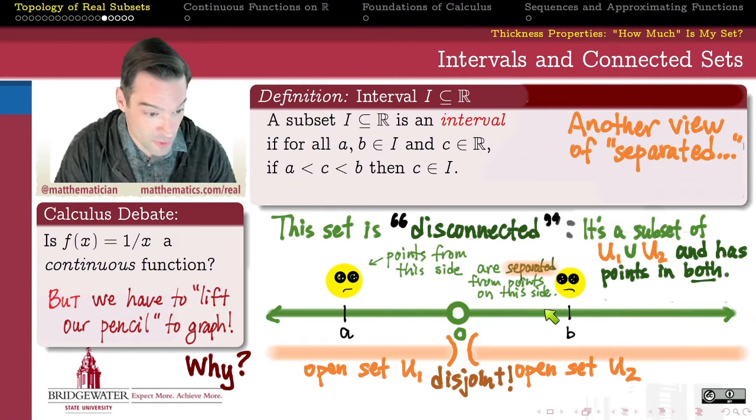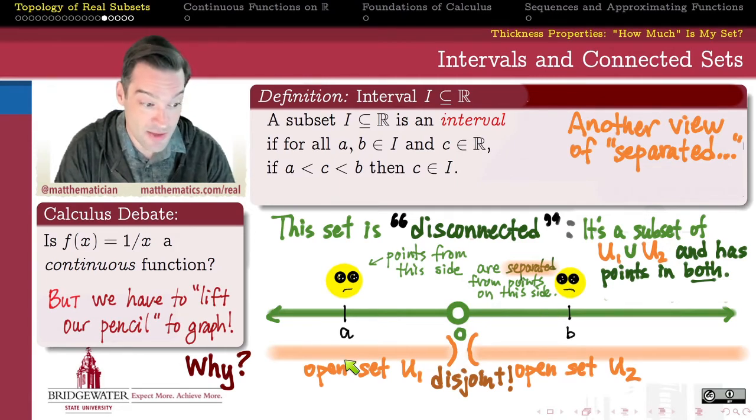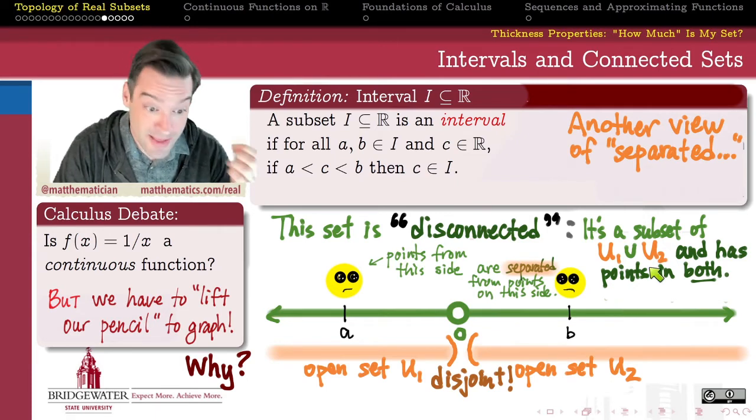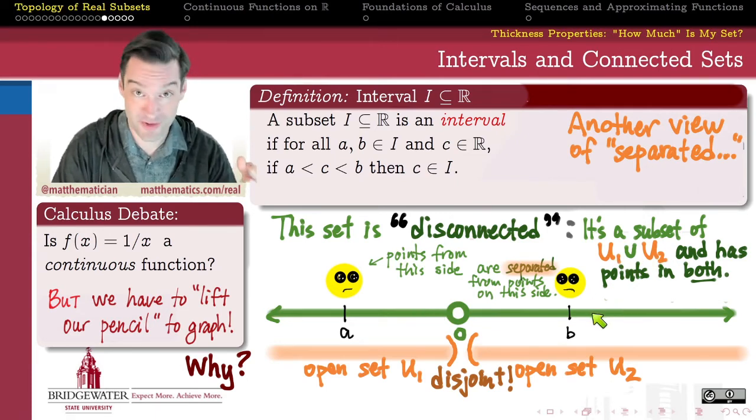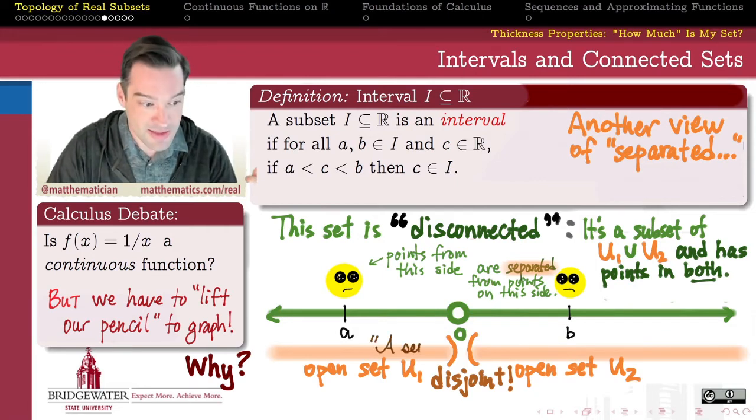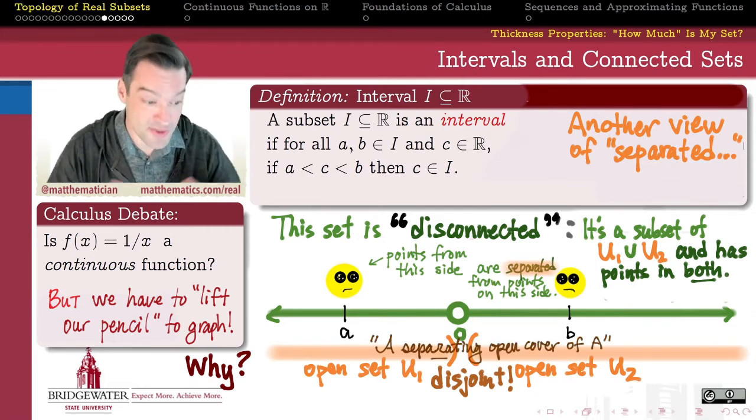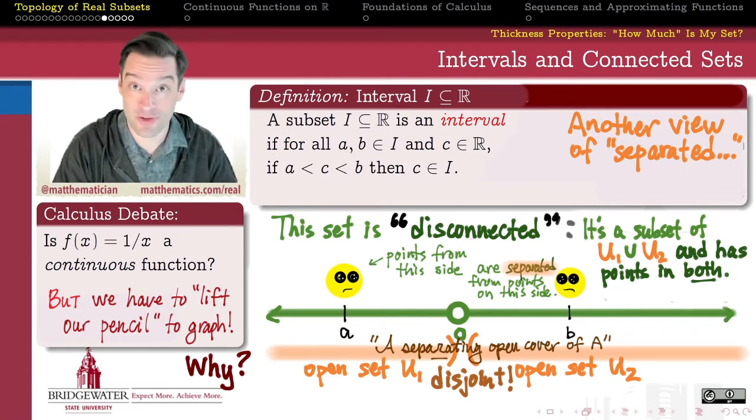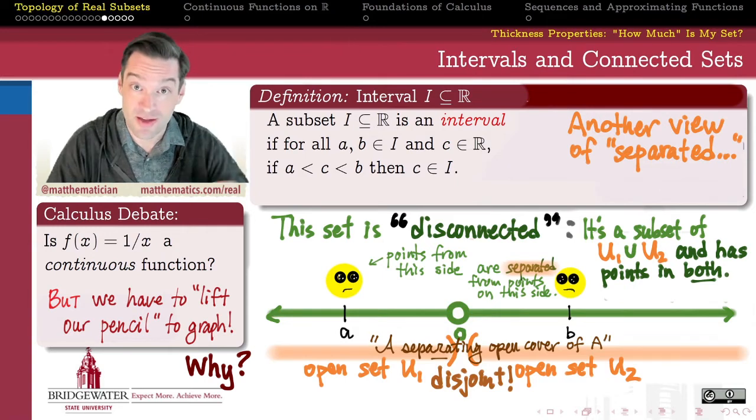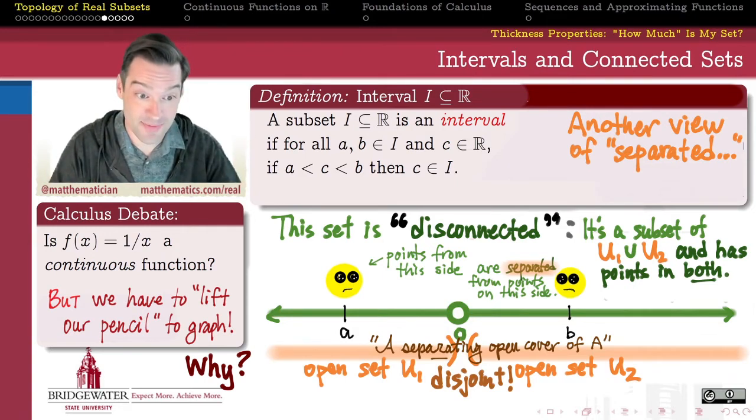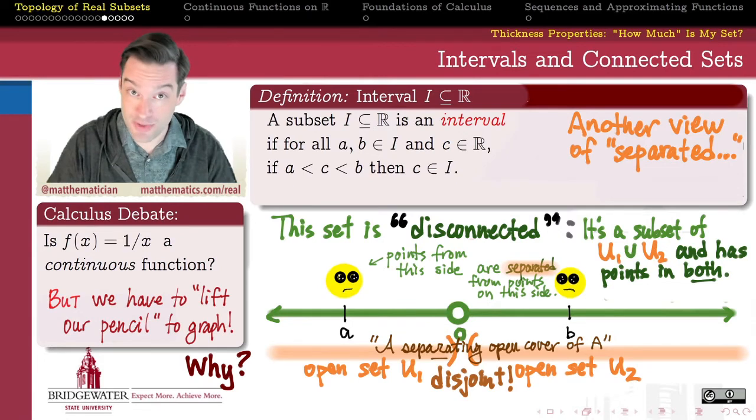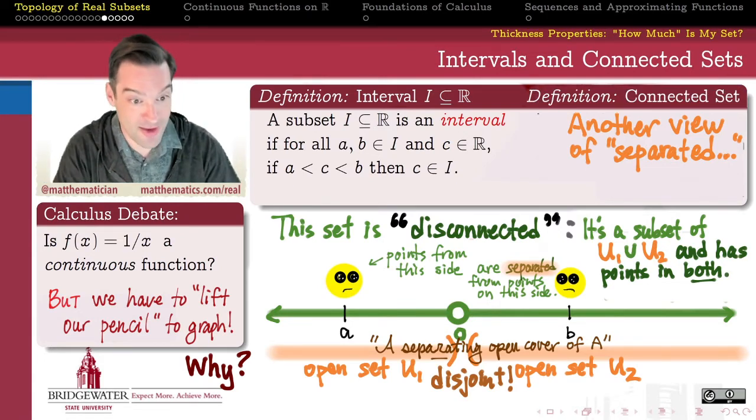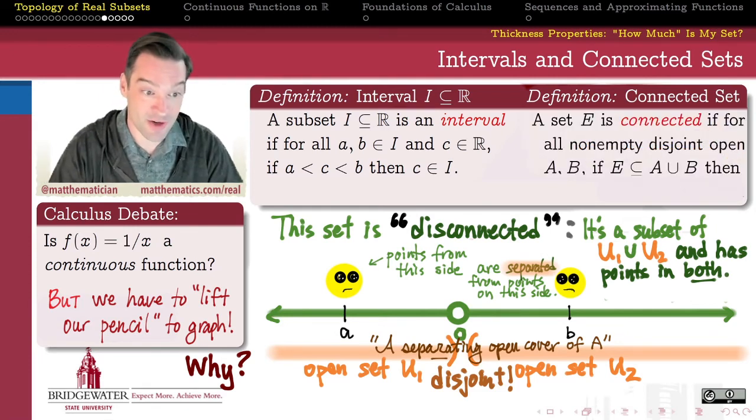So my set A, which is the real numbers without zero, is a subset of the union of two disjoint open sets. And also, this green set A has some points that reside in U1, so it contains some negative numbers, and it also contains some positive numbers. But it is completely contained in the union of the negative numbers with the positive numbers. So this is going to be my topological notion of what it means for a set to be disconnected, is if I have a separating open cover of my set, a disjoint collection of open sets, of which my set is a subset of their union, and which contains points in every one of those open sets.